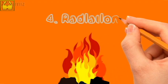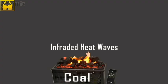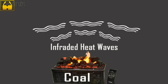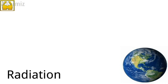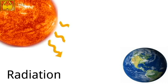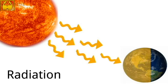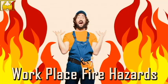Number 4: Radiation. Heat energy can be radiated through air in the form of invisible infrared heat waves. For example, heat from the sun reaches the earth in the form of invisible infrared heat waves and causes heat. This process is called radiation.